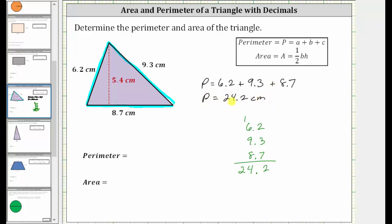Remember, the perimeter is a length or distance. And because the sides are in centimeters, the perimeter is also in centimeters. So let's go ahead and record the perimeter and now work on determining the area.